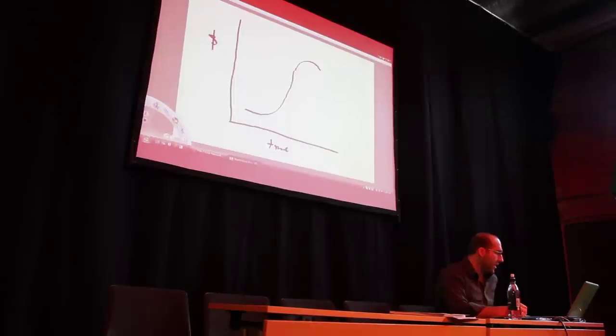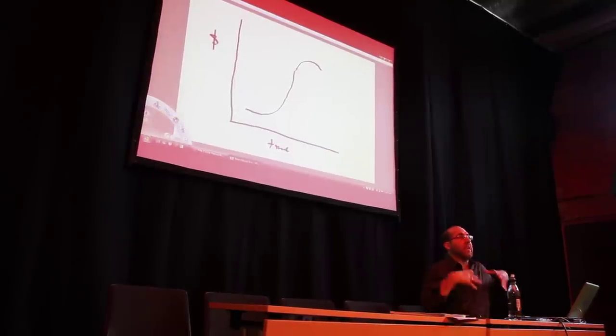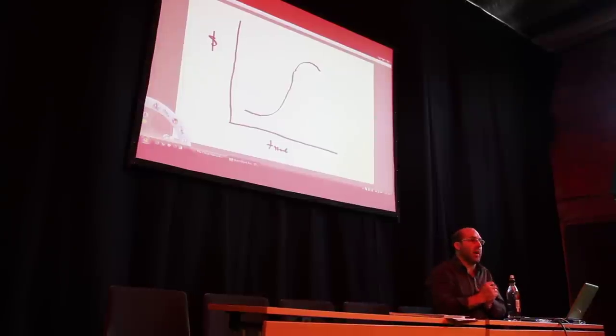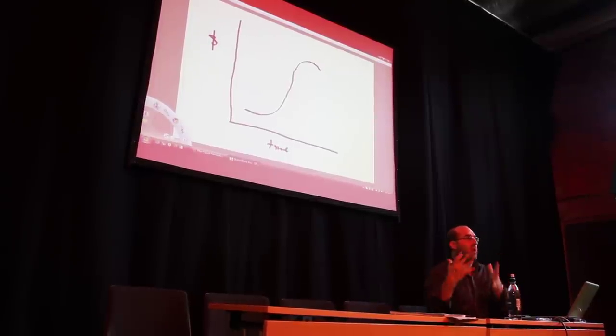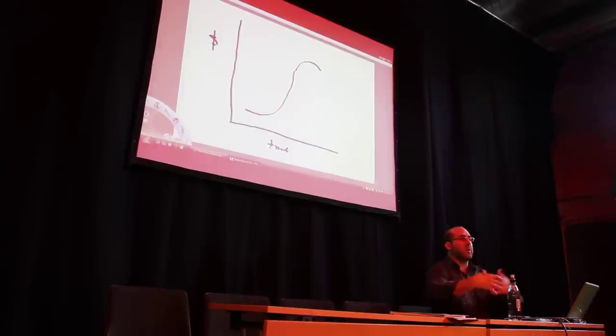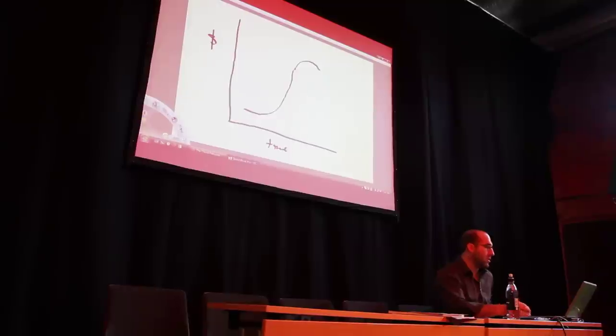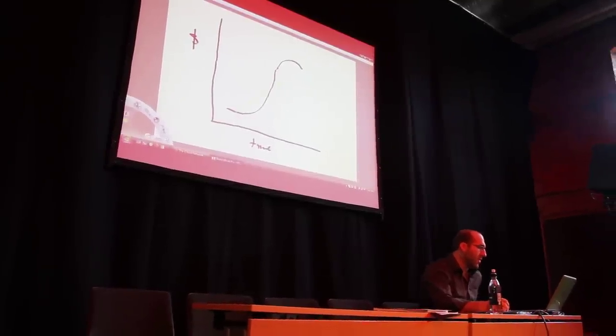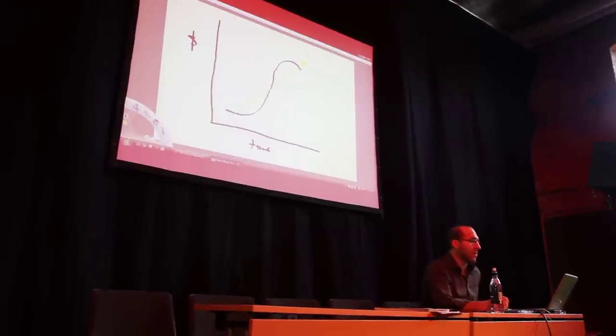And generally speaking, along that curve, there's something that drives demand along that curve. Like what's driving people to line up outside the store? What's driving people then to be the followers to penetrate the market, reach mass market, and so on? So there's usually something driving demand along that curve.